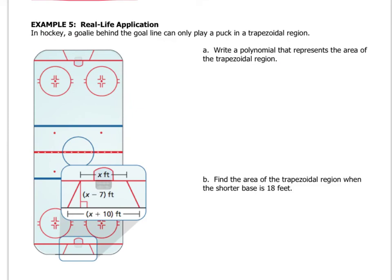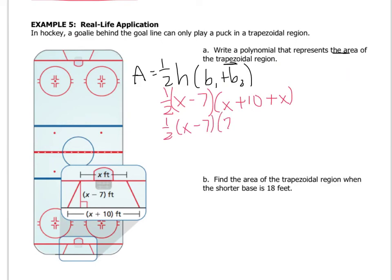In hockey, a goalie behind the goal line can only play a puck in a trapezoidal region. A, write a polynomial that represents the area of the trapezoidal region. So we've got to know the formula for area of a trapezoid. Well, that is 1/2 height times base 1 plus base 2. So let's plug in what we know. 1/2 plugs in as 1/2. The height of the trapezoid is right here, x minus 7. And then base 1 is here, and base 2 is here. So x plus 10 plus x. Before I do anything, I'm going to combine. So I'll write 1/2 times (x minus 7) times (2x plus 10).